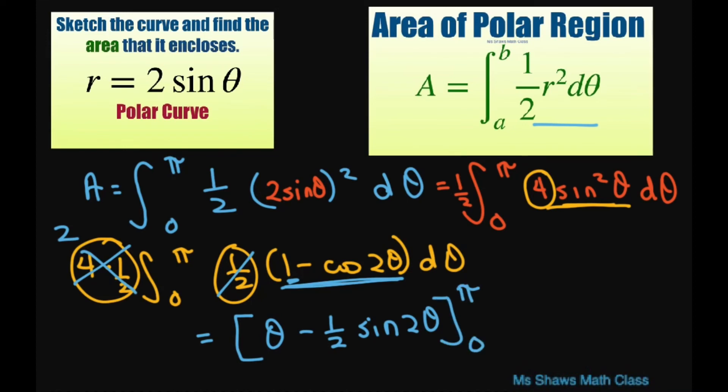So this is going to equal pi minus 0 minus 0 minus 0. So this equals pi. And also note, this is a circle with a radius of 1. And so its area is going to be pi times 1 squared, which equals pi.